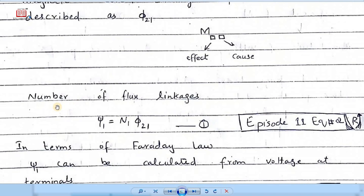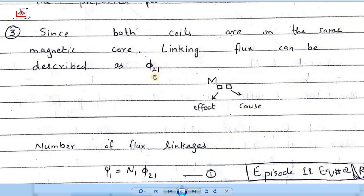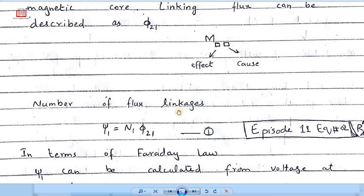After establishing the order — flux φ₂₁ is in the ferromagnetic material — the discussion moves to the number of flux linkages. There are two flux linkages: one for coil one and one for coil two. The first flux linkage is ψ₁ = N₁ · φ₂₁. If, for example, there are two turns (N₁ = 2), then ψ₁ = 2 · φ₂₁. If we don't know the flux value, there are other formulas in network analysis.